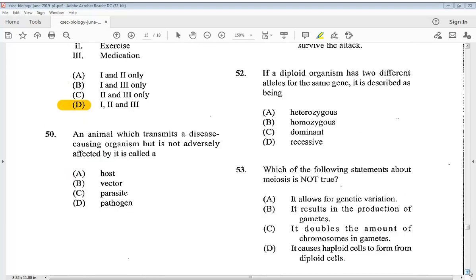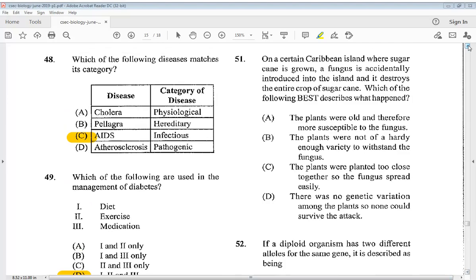Question 50: An animal which transmits a disease causing organism but is not adversely affected by it is called A a host, B vector, C parasite, or D pathogen. So we know it is B, vector. Let's go to 51. On a certain Caribbean island where sugarcane is grown, a fungus is accidentally introduced into the island and it destroys the entire crop of sugarcane. Which of the following best describes what happened? A the plants were old and therefore more susceptible to the fungus, B the plants were not of a hardy enough variety to withstand the fungus, C the plants were planted too close together so the fungus spread easily, D there was no genetic variation among the plants so none could survive the attack. So the answer is D.